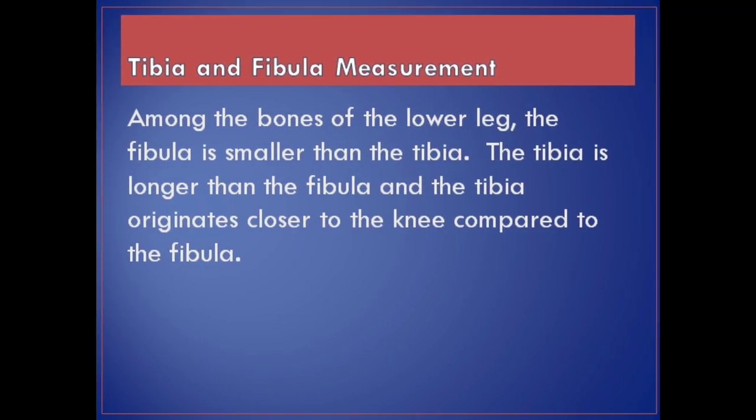Tibia and fibula measurement. Among the bones of the lower leg, the fibula is smaller than the tibia. The tibia is longer than the fibula and originates closer to the knee compared to the fibula.